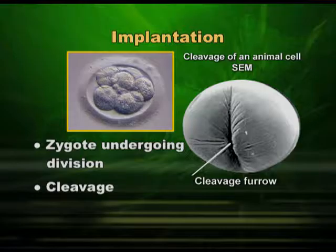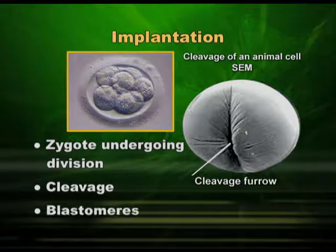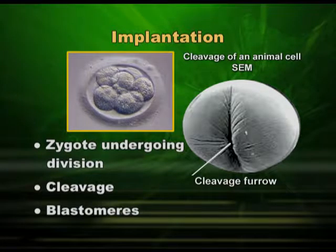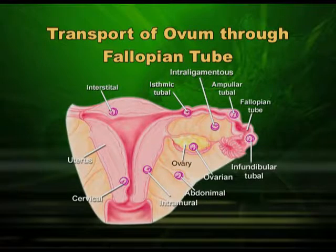Coming back to cleavage — that is the first division, it is vertical. The second division is horizontal to the first, resulting in four cells. Then the division goes on: 8, 16, 32. Till this stage it is a ball of cells. Then a cavity appears in the center called the blastocele, and hence the structure is called the blastula.